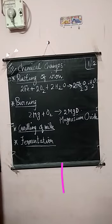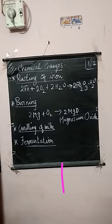In physical change, there is no formation of new substance. But in chemical change, there is a formation of new substance — that is, new chemical composition will be there in that substance. That is the main difference between physical change and chemical change that we studied in the last video.